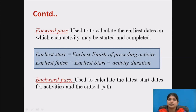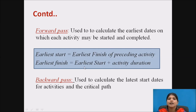The forward pass is used to calculate the earliest start and the earliest finish date. The earliest start date is calculated as the earliest finish of the preceding activity. Earliest start plus activity duration gives the earliest finish date.